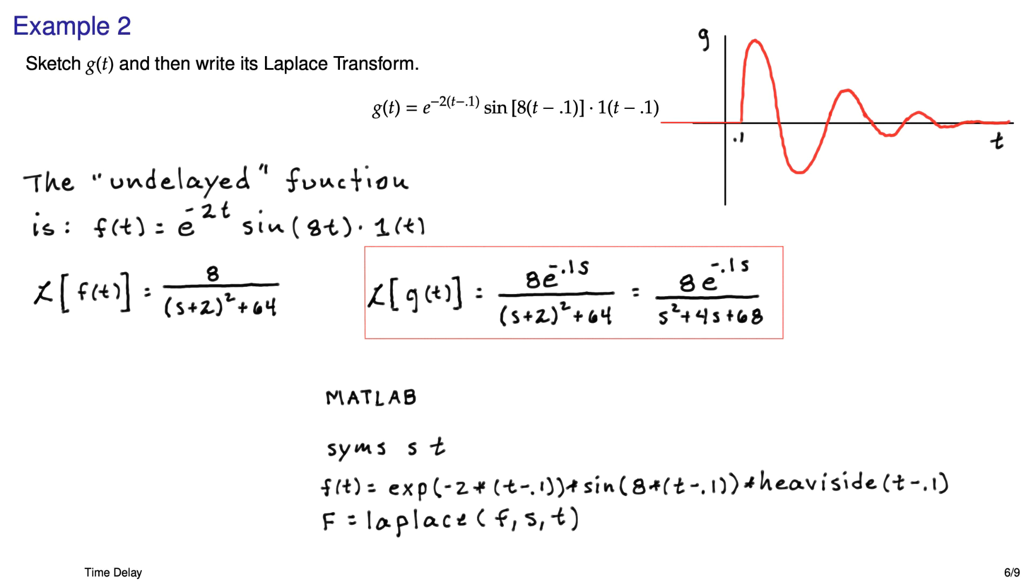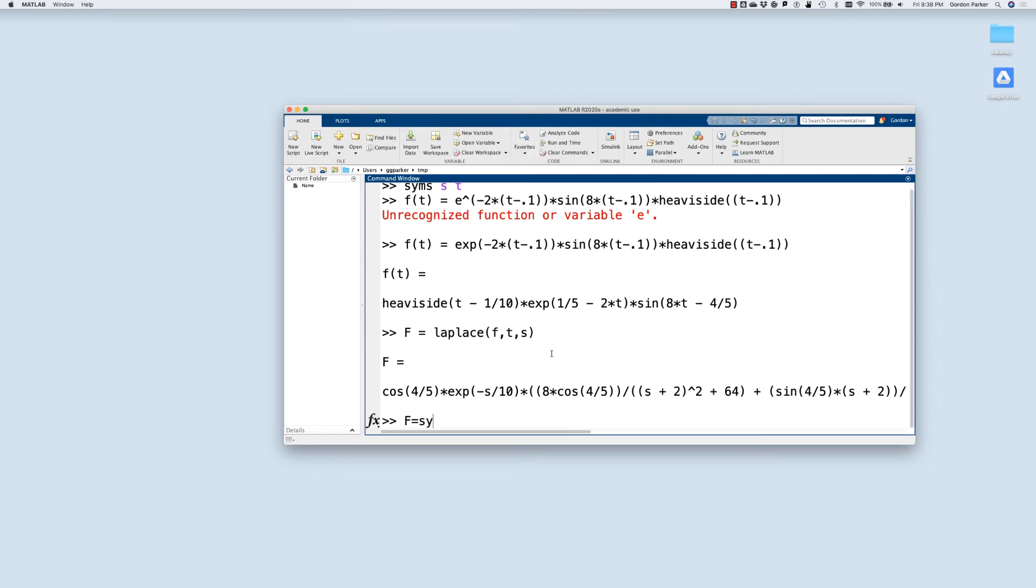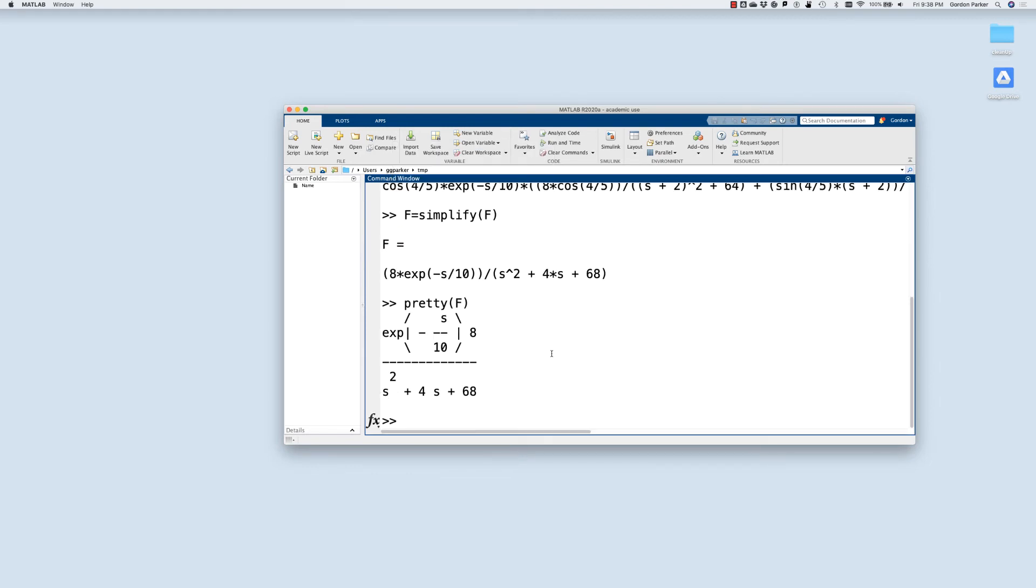Now once you do that, it's going to be in a rather strange form, so you'll need to simplify that so that it looks like the same form that we have in the red box. And there we go, this should look just like the expression we had on the previous page in the red box. I'm using the pretty command so that we can see it in the same way that I wrote it before.